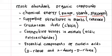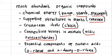They are components of supportive structures in plants, or we call it cellulose, as crustacean shells chitin, connective tissues in animals as acidic polysaccharides. They are essential components of nucleic acids as D-ribose and 2-deoxy-D-ribose.